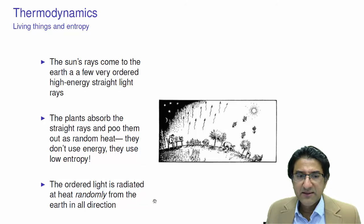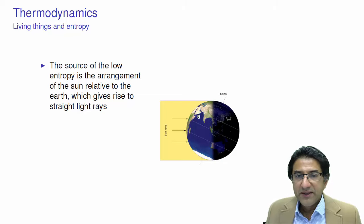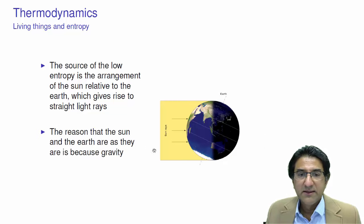Now, the ordered light is, as I said, radiated randomly as heat from all directions in the earth. Here's a picture of the low-entropy light coming from the sun to the earth in a very ordered way. Now, why is it that this light comes in an ordered direction? Well, you think it's obvious. I think it is obvious too. The reason it comes in a straight line is because the earth is a long way from the sun, and it goes around the sun. And the reason it goes around the sun is because of gravity. So somehow, this arrangement of the earth and the sun being held together by gravity is the reason why the sun's rays are so ordered and come to the earth in a particular way.